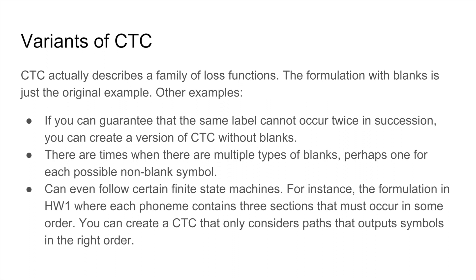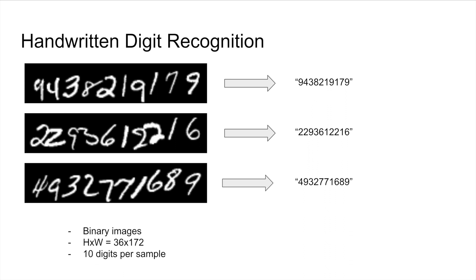And we can even follow certain finite state machines. So consider in homework one, which we actually described before, where there are three subphonemes per phoneme, and there is only non-zero probability of transitioning from the first to the second subphoneme, from the second to the third subphoneme, and then from the third to the beginning of any triplet. And CTC can actually apply these constraints to the output sequence.